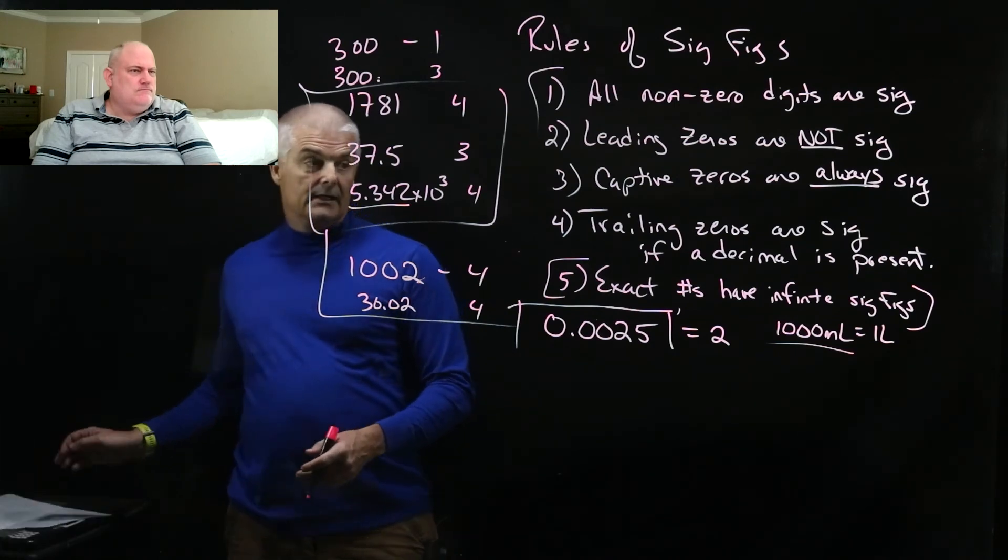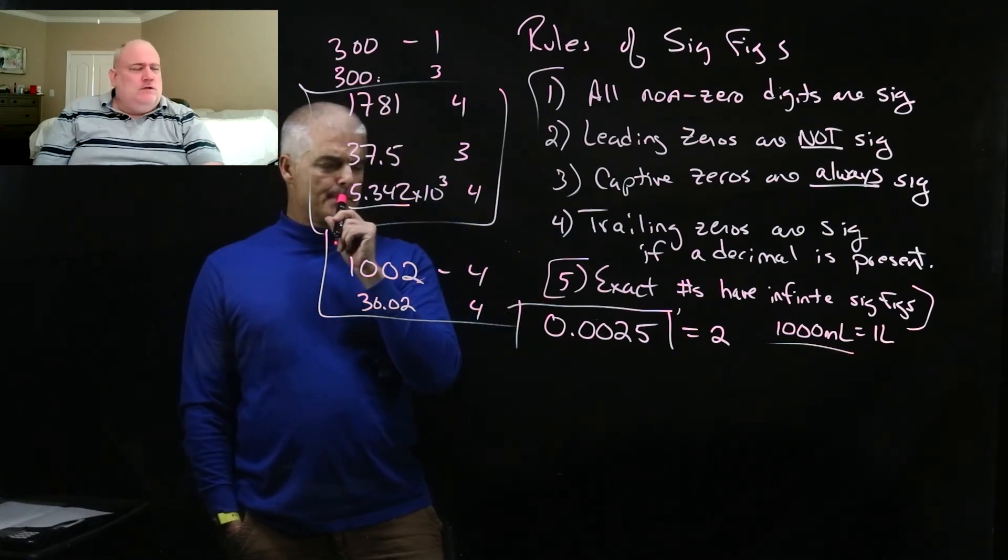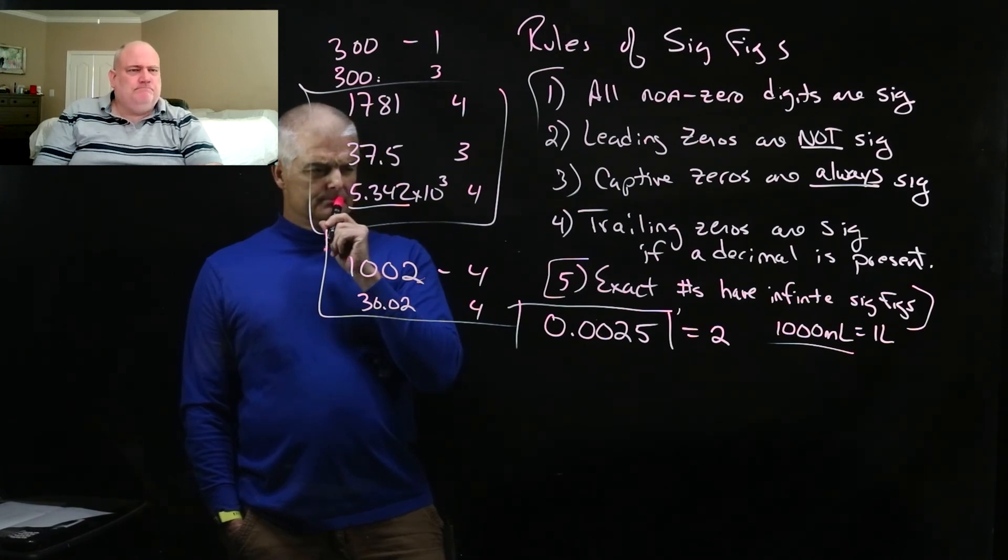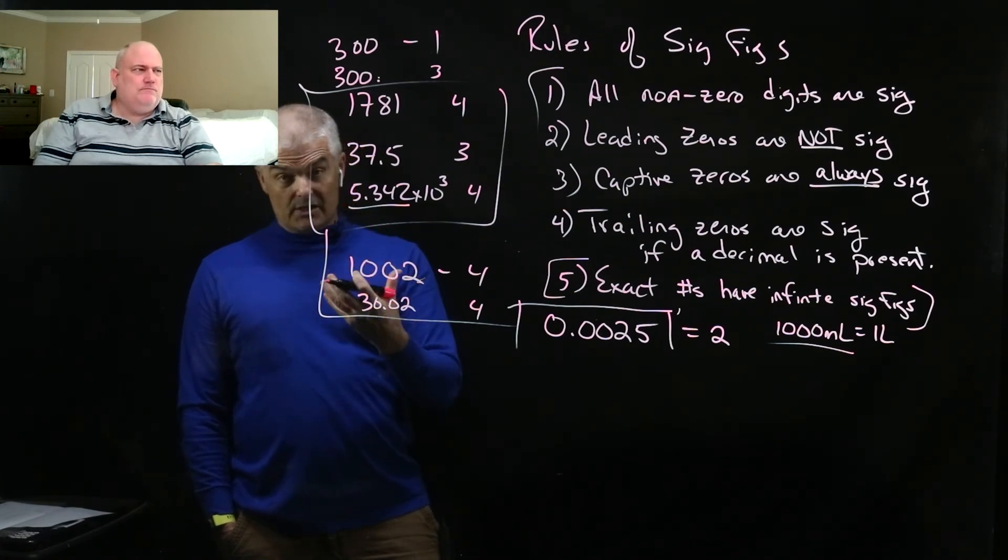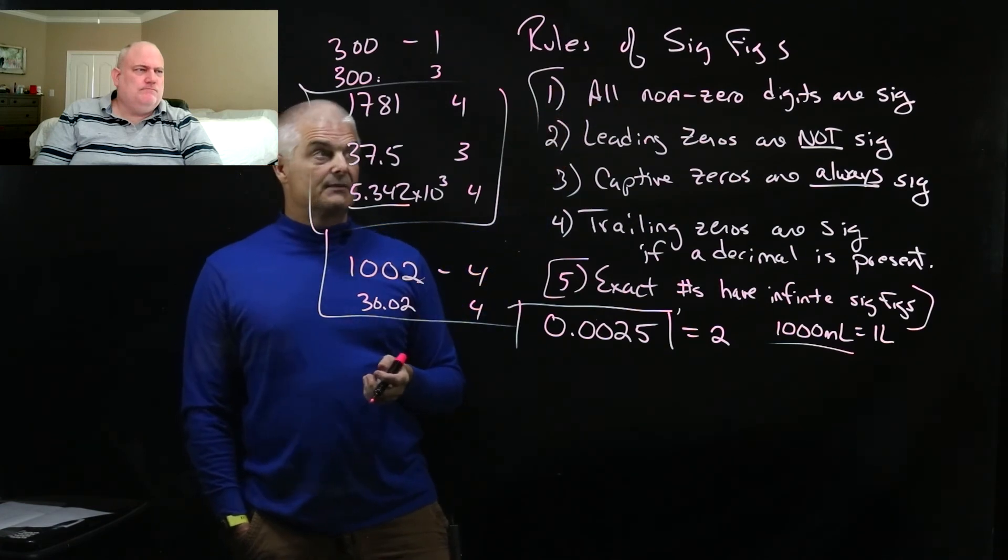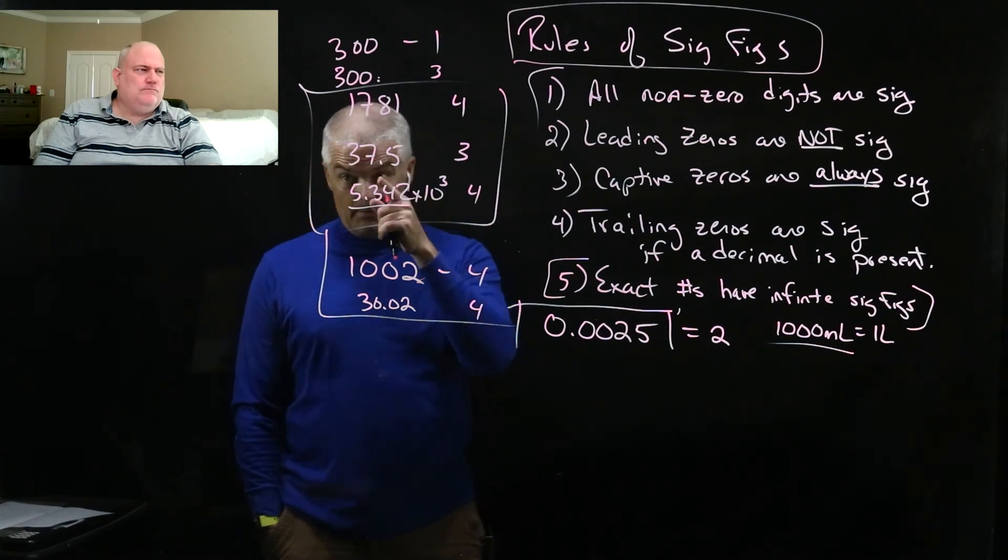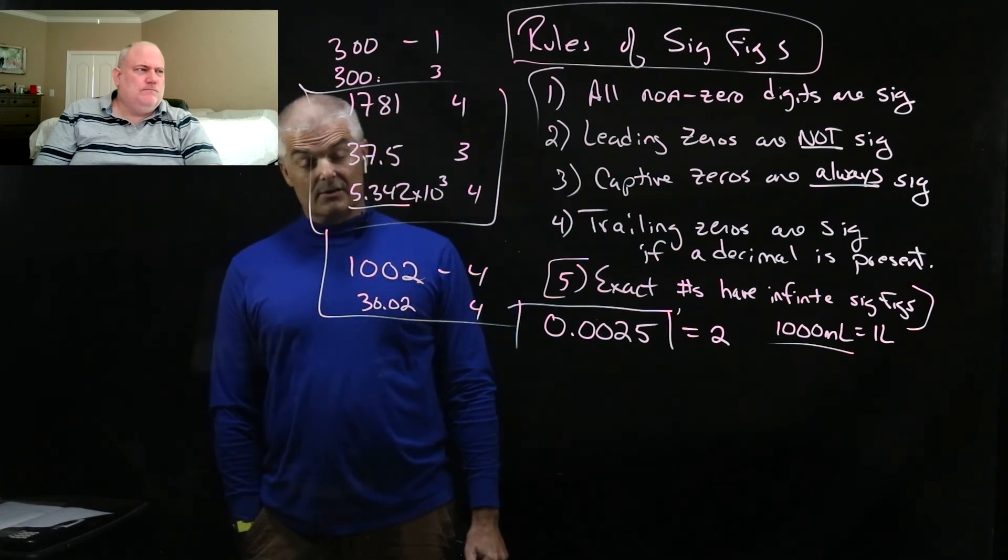Any other examples we need to give, Mr. D? No, no, not at all. All right, so folks, precision, accuracy, and how we figure out significant figures. And we'll learn later how to multiply and divide with them, but that's coming up next, because you're awesome.